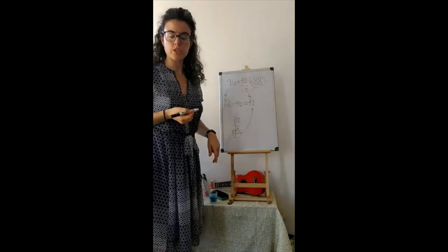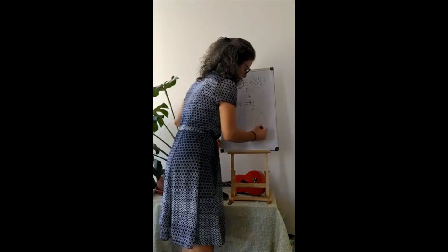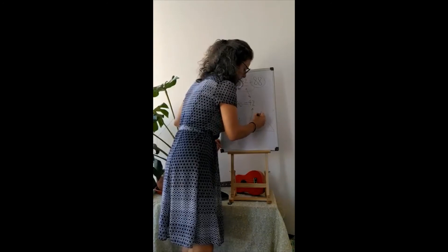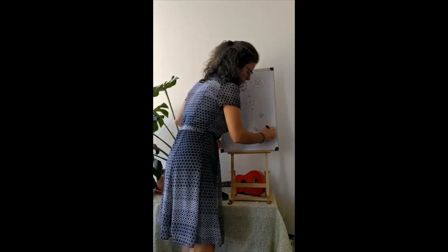Did you get forty-two as your answer? Let's make our triangle for our fact family for this problem. We have eighty-eight up here, forty-six, and forty-two.